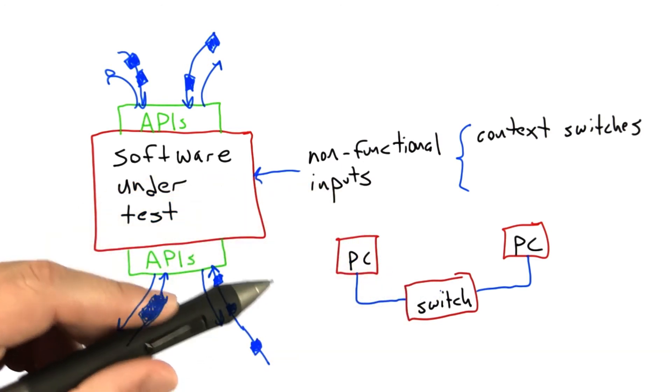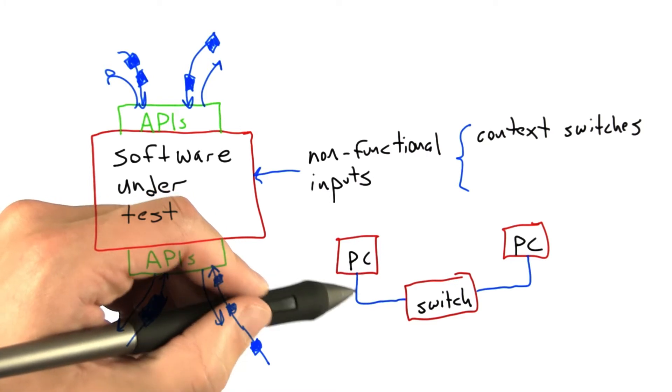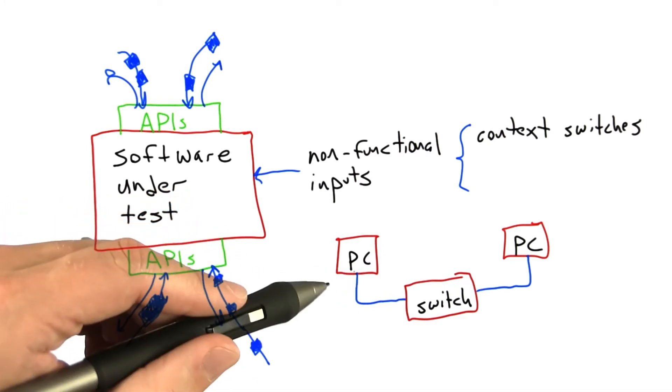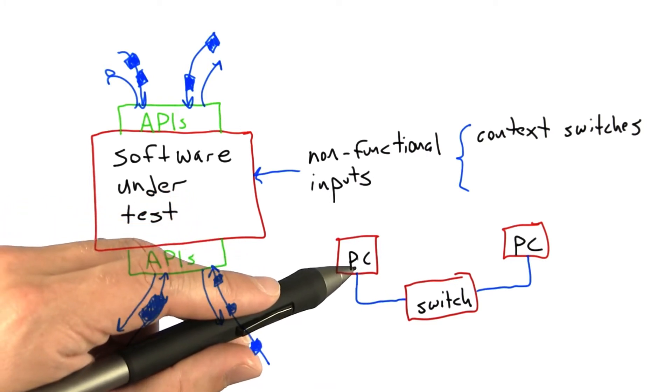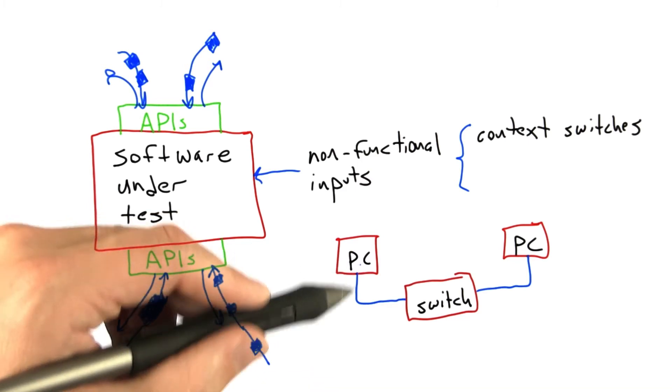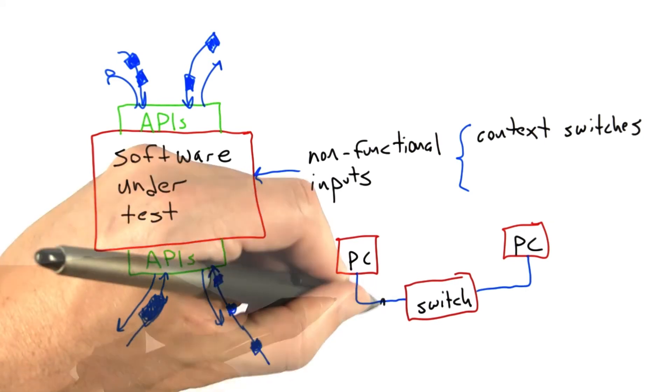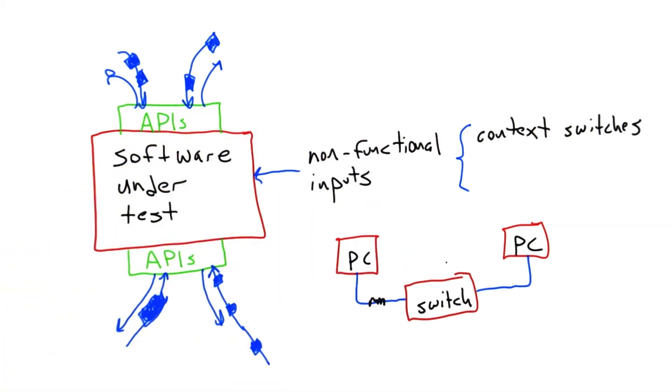The interesting thing about the software we were developing that ran not only on the PC but also on a network card was that it was completely independent of the TCP/IP stack that normally provides reliable delivery for machines connected by networks. But it was also supposed to provide reliable delivery of data even when we had errors in a network.